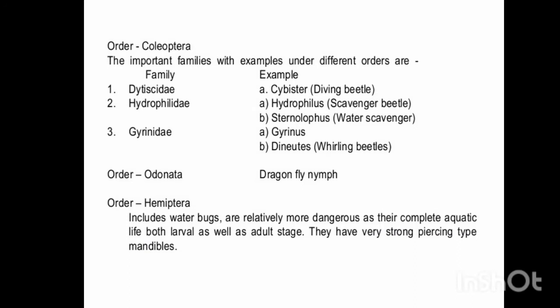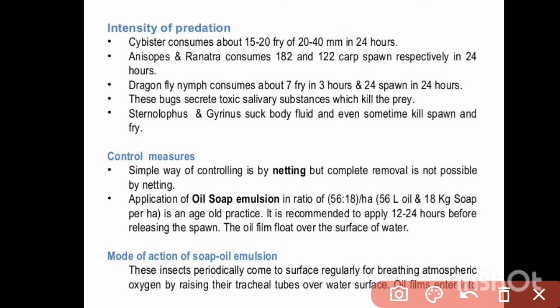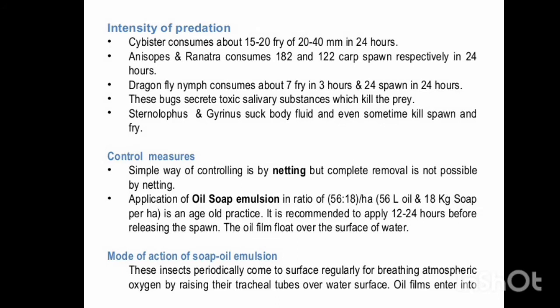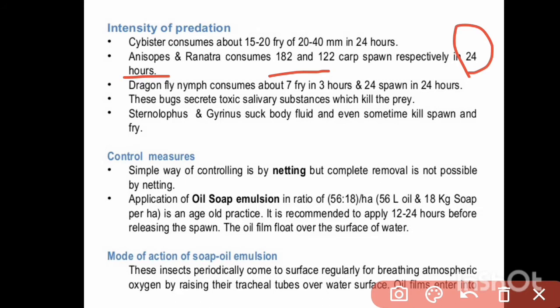Regarding the intensity of predation — how much damage aquatic insects cause: Cybister consumes about 15 to 20 fry of 20 to 40 mm in 24 hours. Nepa and Ranatra consume about 182 and 120 carp spawn respectively in 24 hours. Dragonfly nymph consumes about 7 fry in 3 hours and 24 spawns in 24 hours.